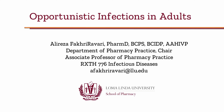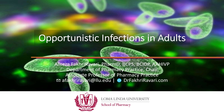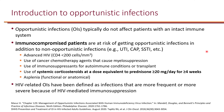I'm Dr. Fakirabadi and this is Opportunistic Infections in Adults. Opportunistic infections typically do not affect patients with an intact immune system. The name opportunistic refers to the fact that these infections take advantage of immunocompromised patients.